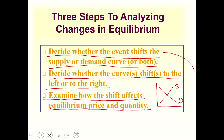Here we have the graph with demand and supply. Let's assume the demand curve shifts — the question tells you which curve to shift. I'm assuming a decrease in demand, which shifts the demand curve towards the left. This is D2, the new demand curve. The first equilibrium was here; the new equilibrium is this one.